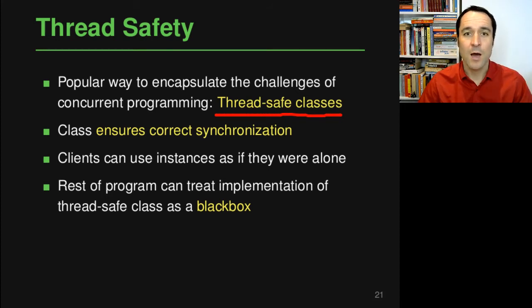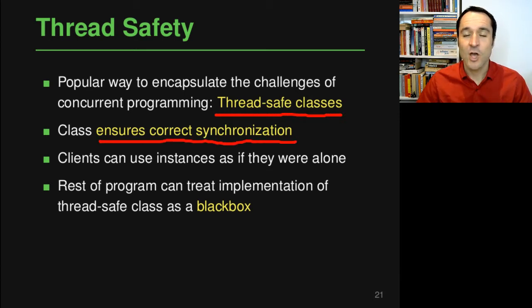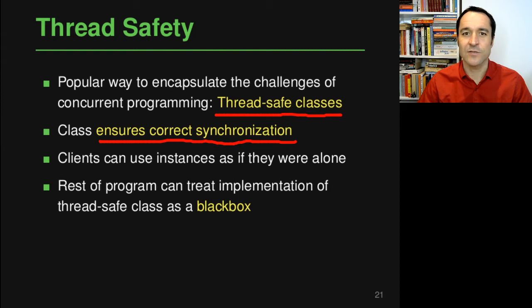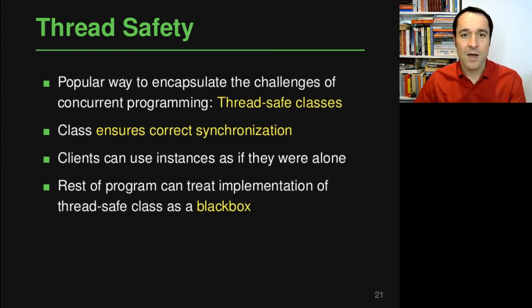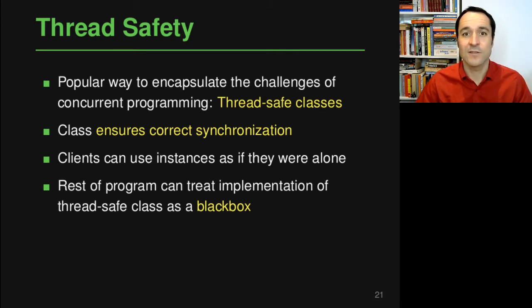In the rest of the program, you can basically assume that this class is ensuring the correct synchronization of all shared memory accesses, so that clients of this class can use instances of this class as if they were alone and no other threads would access these instances. In a sense, the rest of the program can treat a thread-safe class as a black box and just call its methods without really thinking about the other threads that may also use objects of this class at the same time.